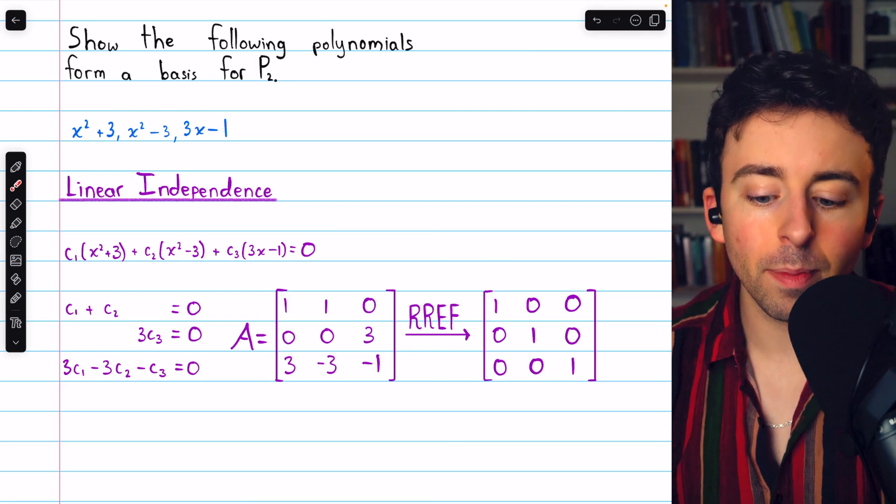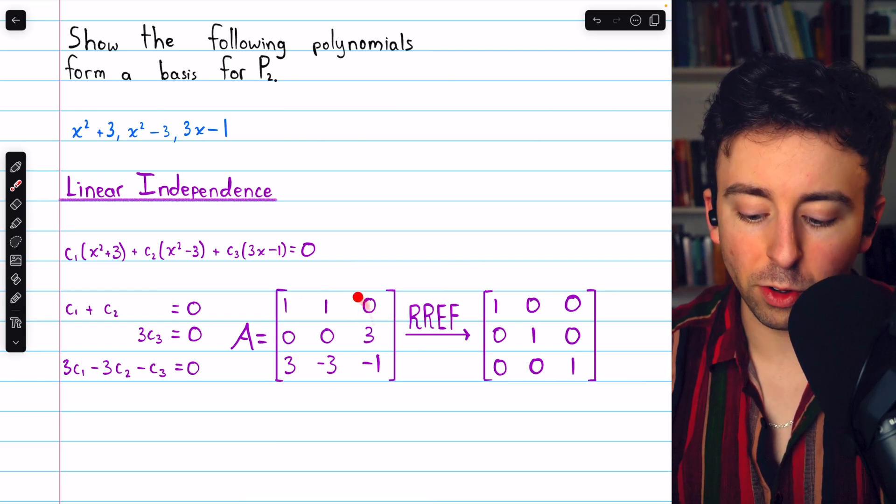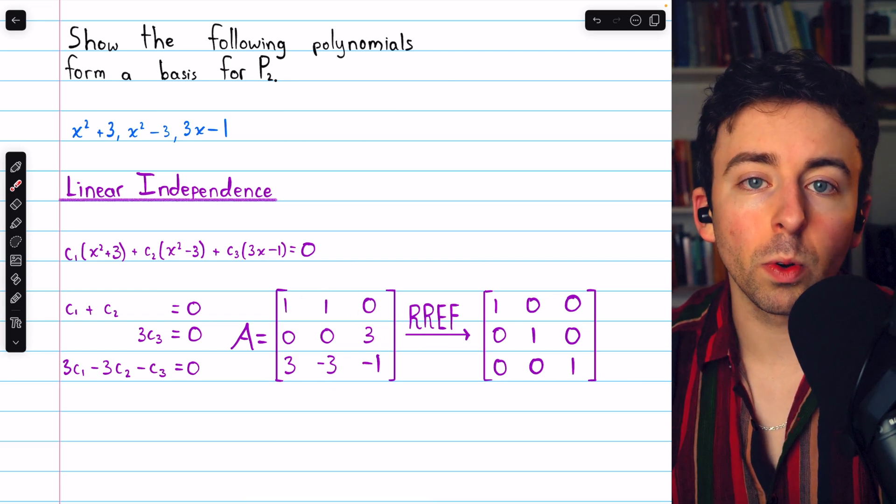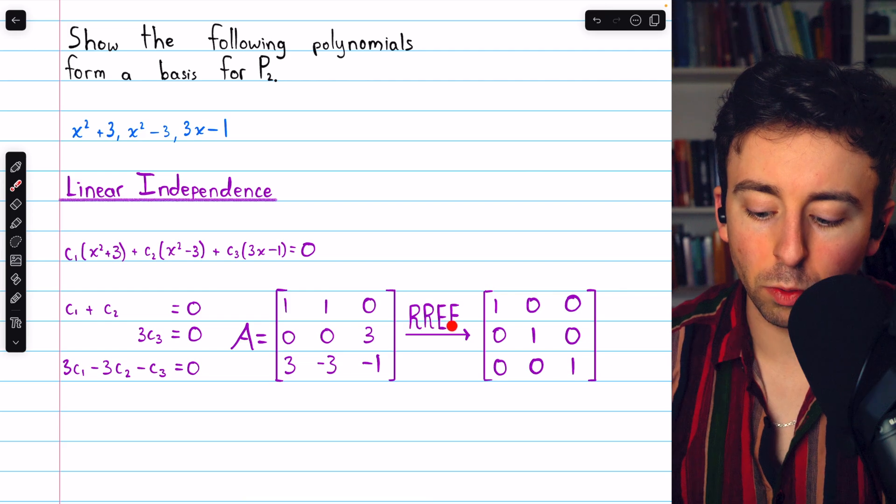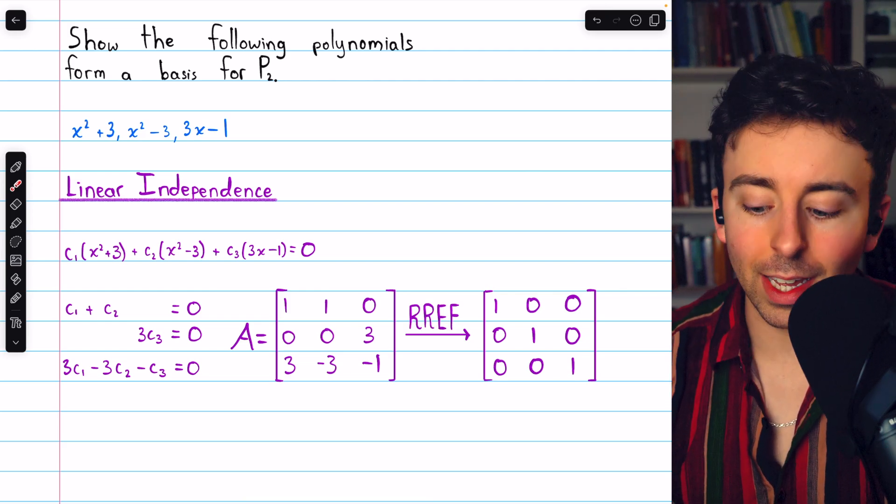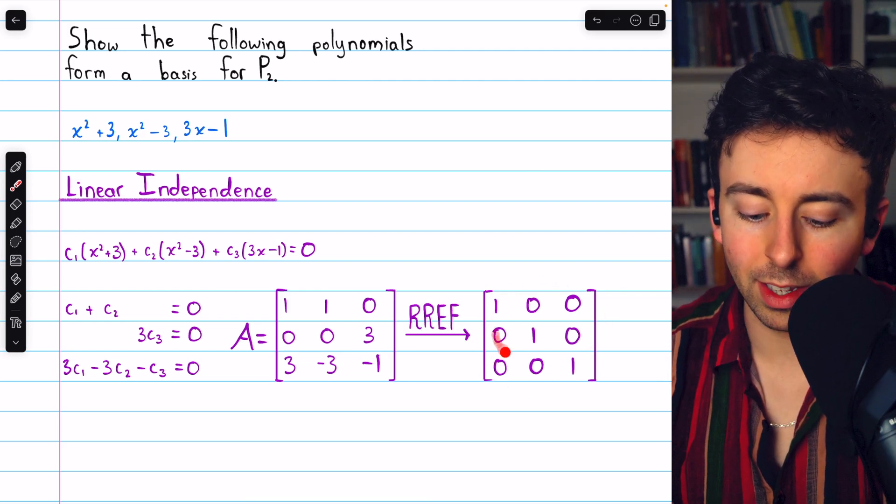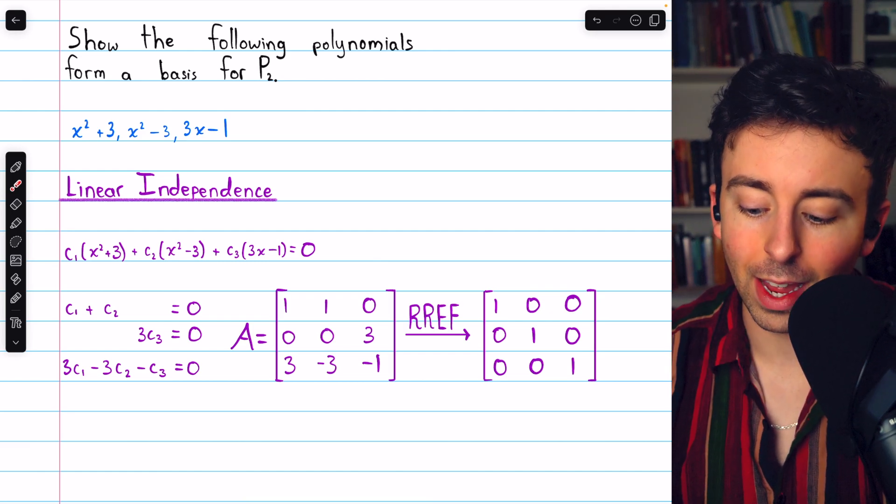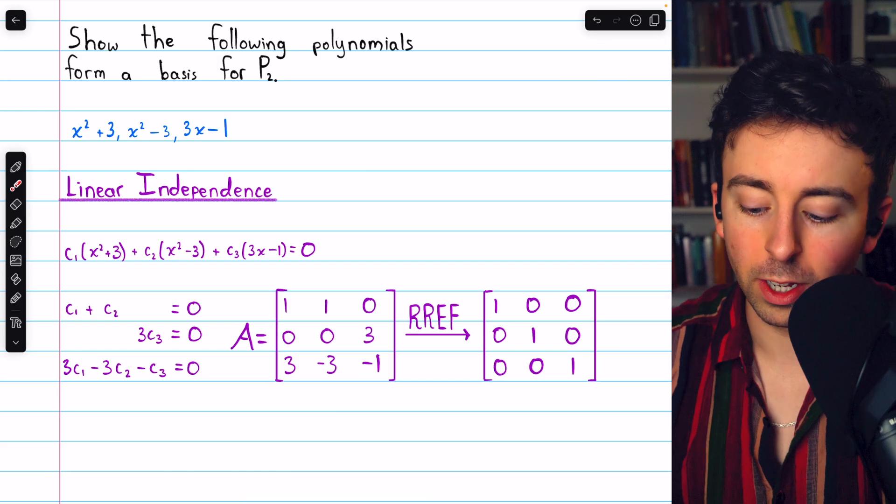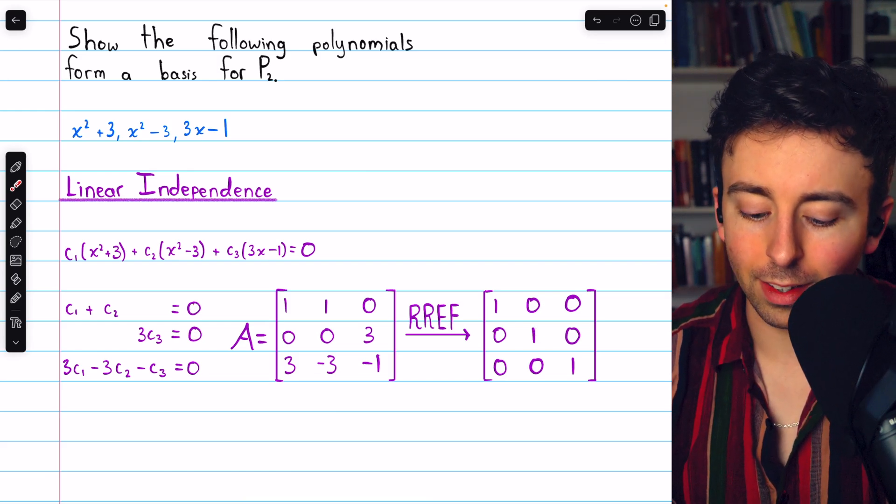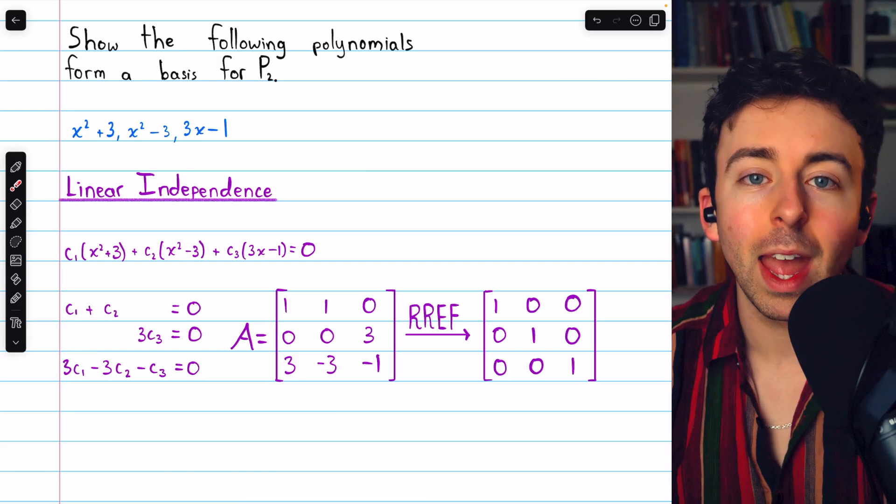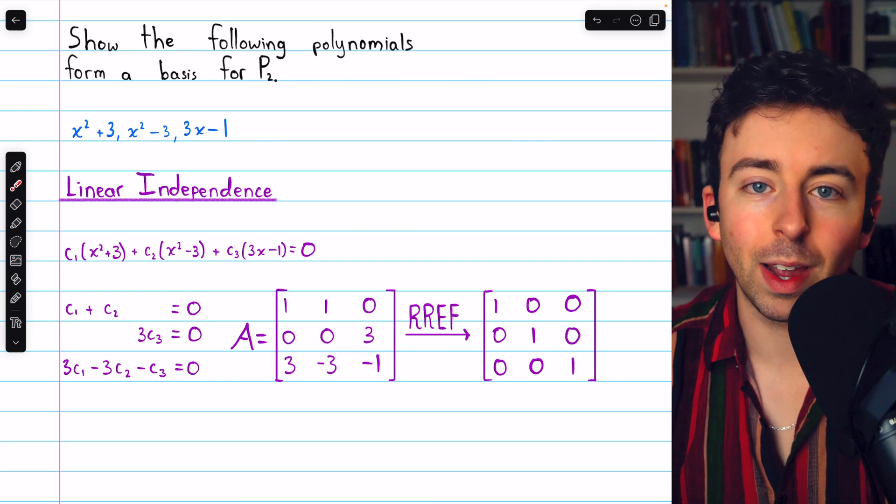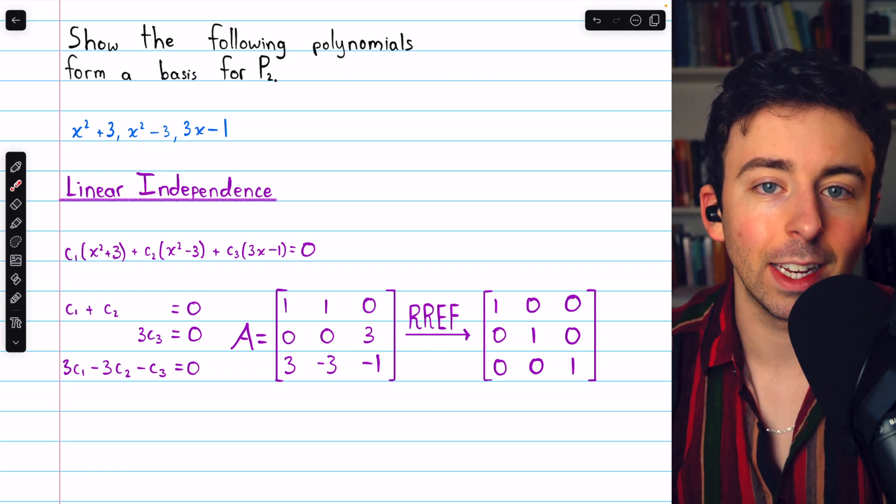There are two ways to do that. One way is to take the coefficient matrix and then use Gauss-Jordan elimination to get it into reduced row echelon form. If you get the identity, like we do in this case, that tells us there is one solution to this system and it is the trivial solution. c1 equals 0, c2 equals 0, and c3 equals 0. Hence, the polynomials, those vectors, are linearly independent.